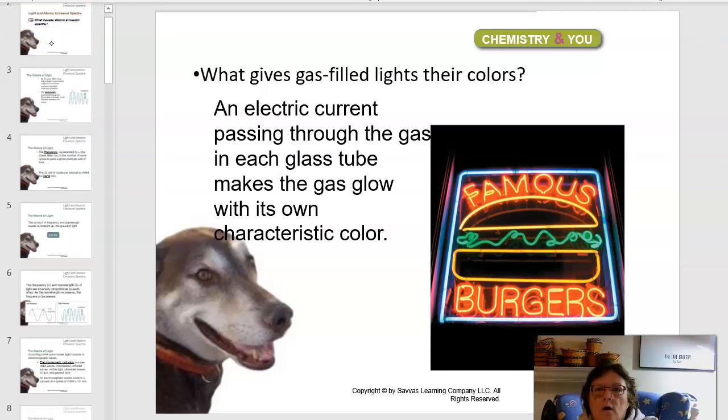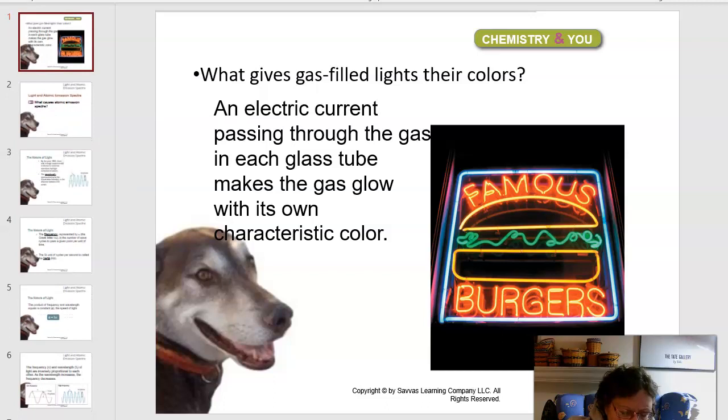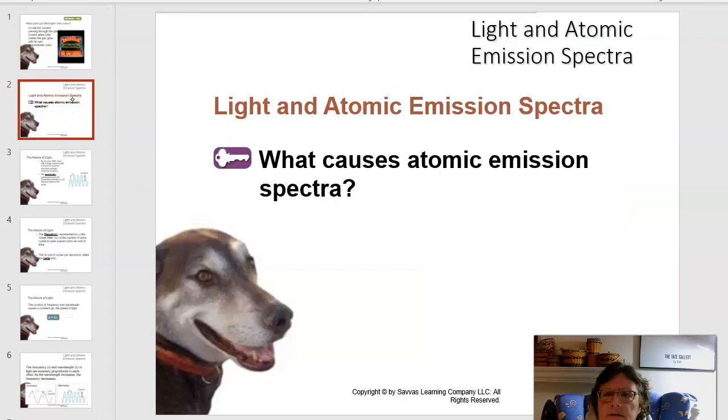All right, we're here today to talk about why neon gas lights up and gives such pretty colors. We're going to talk about atoms and their spectra. By spectra, I mean they make a pattern in the light that they give off. So let's start. The first question we're going to ask is what causes atomic emission spectra?